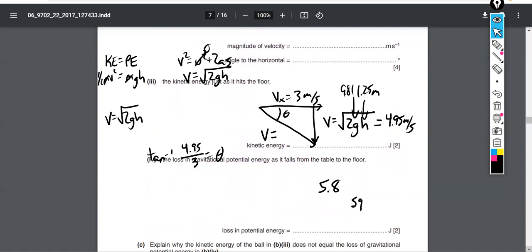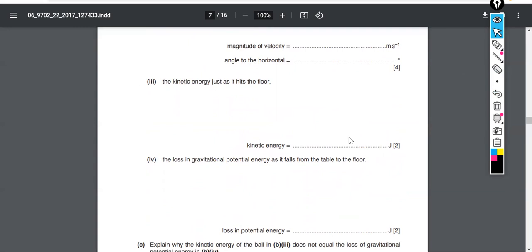Question goes on to ask for the kinetic energy just as it hits the floor. So remember that it was going 5.8 meters per second. We have one-half m v squared. They tell you the mass was 0.45 kilograms, and it was going 5.8 meters per second. Square that. You get 7.6 joules of kinetic energy.